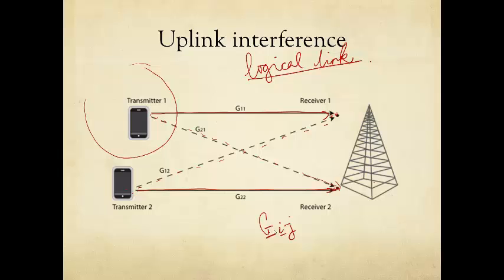Now this is a little tricky. So we'll go a little slow here. It says G i j represents the channel gain from the transmitter of the logical transceiver pair j to the receiver of logical transceiver pair i. So we're going to use the terms user, transmitter-receiver pair, or logical transceiver pair interchangeably.